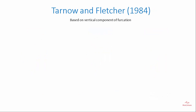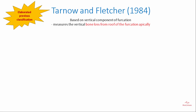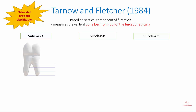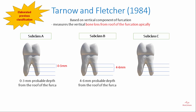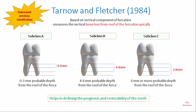Tarnow and Fletcher's classification is based on the vertical component of furcation involvement. It is an elaboration of the previous classification, measuring vertical bone loss from the roof of the furcation in an apical direction. It is divided into subclass A (0–3 mm probing depth from the roof), subclass B (4–6 mm), and subclass C (more than 6 mm). This helps in defining the prognosis and restorability of the tooth.